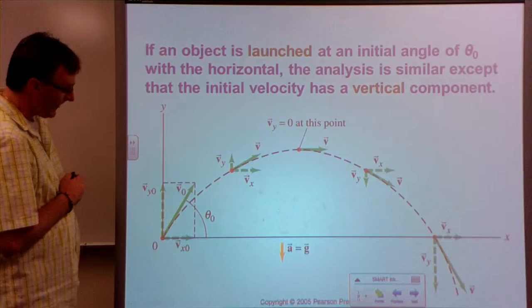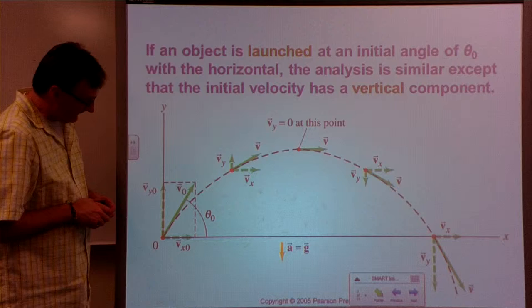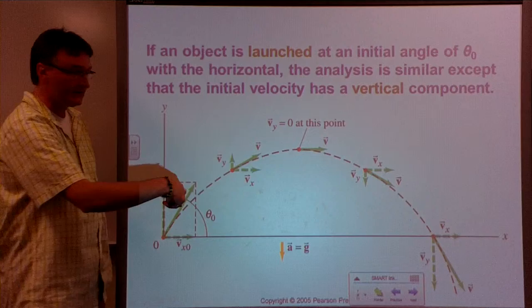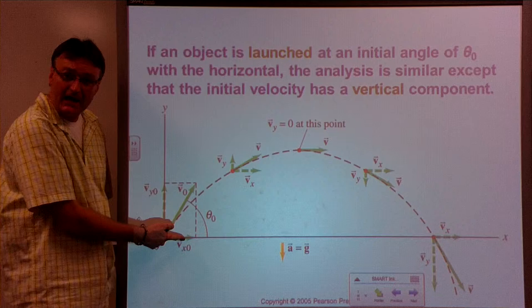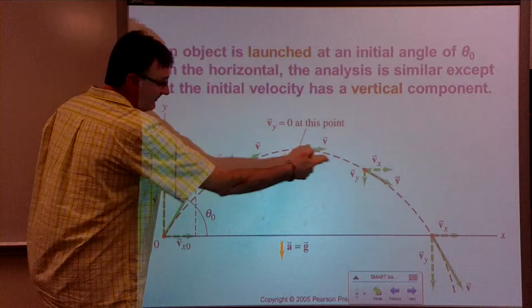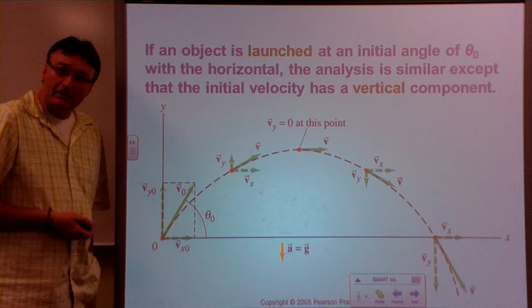We can look at the velocity vectors of the projectile throughout its trajectory. The velocity vectors will change over time. If it's launched with a certain velocity in a given direction, it has an x component. That x component of the velocity will be the same no matter where it is in its trajectory.